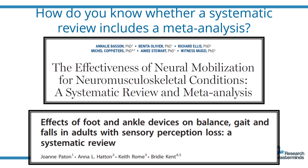How do you know whether you're dealing with a systematic review or a systematic review with a meta-analysis? You often see the title of the publication states whether it's a systematic review or a systematic review and meta-analysis, although it doesn't always feature in the title. Sometimes you have to read the abstract to figure out that a statistical analysis was done. If it's not apparent from the abstract, you can scroll down to the full paper and look at the method section and the results section to see if a statistical analysis was done.